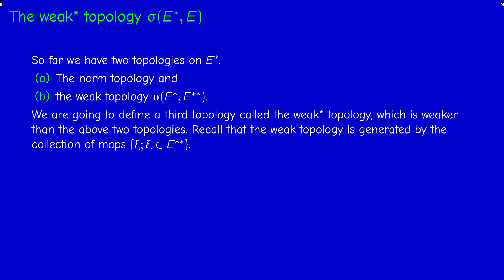According to what we said in the previous section, the weak topology is generated by the maps φ_ξ — here I use different notation, writing ξ instead of f. The map ξ is a function from E* to ℝ, so it's just the same thing.